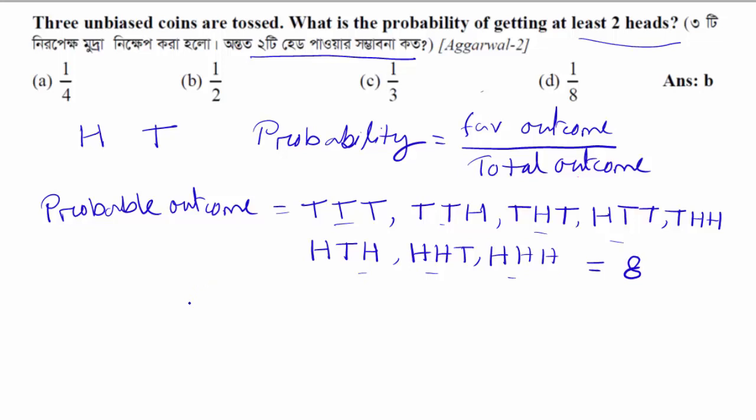Now, what is the favorable outcome? The favorable outcome is the one with at least two heads.